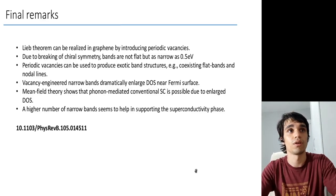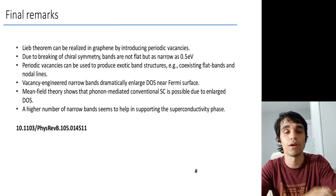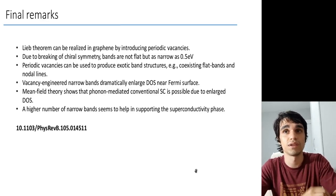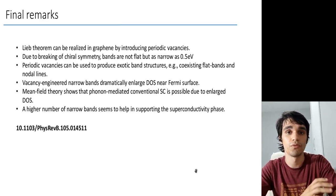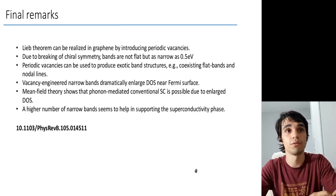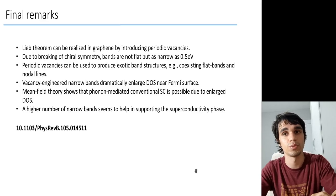So, just as a final remark, I'm going to say that the Lieb theorem can be realized in graphene by introducing periodic vacancies. And in the realistic case, due to the breaking of chiral symmetry, bands are not flat, but they are as narrow as 0.5 electron volts. Periodic vacancies can be used to produce more exotic band structures, like coexisting flat bands and nodal lines. I didn't have time to talk about this, but feel free to check the published paper and check it out. Vacancy engineering narrow bands dramatically change the density of states near the Fermi surface. And due to this fact, the mean-field theory showed that phonon-mediated conventional superconductivity is possible due to this enlarged density of states. And we can say that a higher number of narrow bands seems to help in supporting the superconductivity phase. So, I would like to thank you for your attention and be safe.